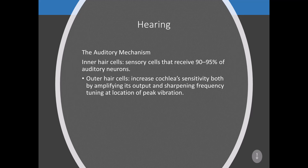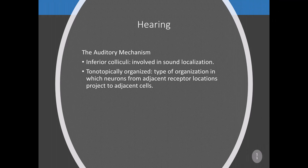Experimentally induced damage to outer hair cells causes a dramatic loss of hearing and a loss of frequency selectivity along the basilar membrane. The two cochlea make up part of the auditory nerves — the eighth cranial nerve — one entering the brain on each side of the brain stem. Information passes through the lateral lemniscus to various brain stem nuclei, then to the inferior colliculi, then to the medial nucleus of the thalamus, and finally to the auditory cortex in the temporal lobe.